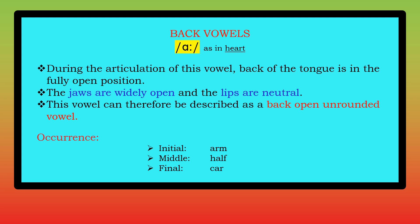The first sound — let's start from the beginning. The word is 'arm.' During the articulation of this vowel, the back of the tongue is in the fully open position — the tongue raise is at its lowest level. Jaws are widely open, and the lips are neutral.